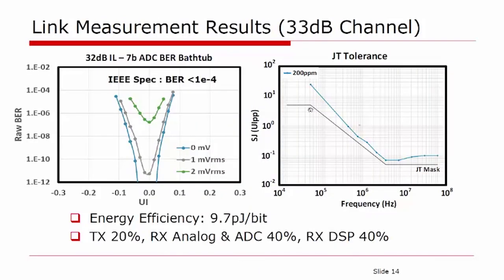Over a 33 dB channel, the transceiver is able to achieve better than 1E-12 BER without additional crosstalk. When 2 mV of additional crosstalk is added to the receiver, the BER is better than 1E-6, which exceeds the IEEE spec of 1E-4.